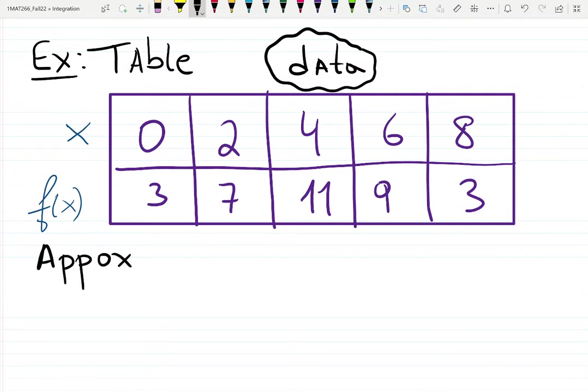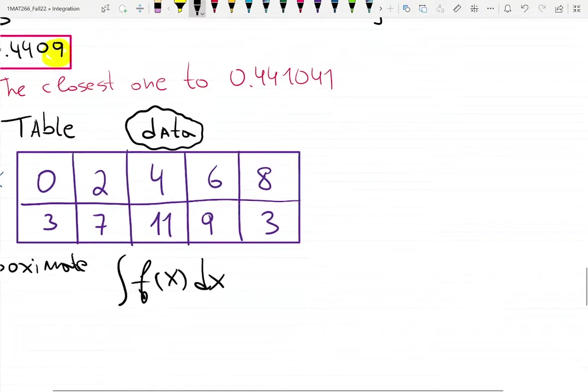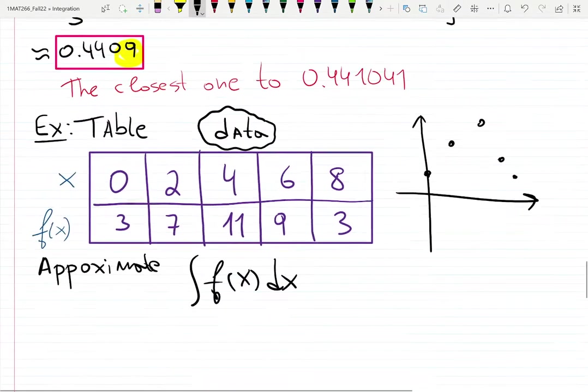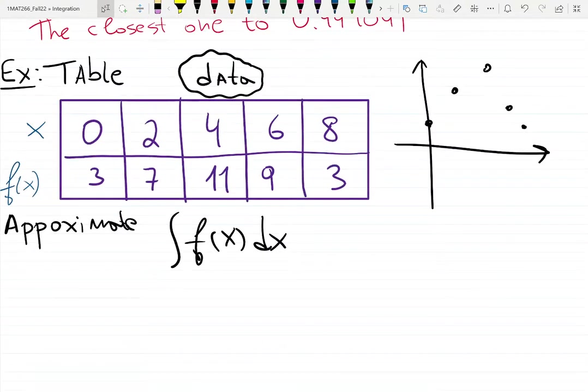Let's approximate the integral of f(x)dx. We don't know the function as an expression, only five data points: at x=0, f(x)=3; at 2, f=7; at 4, f=11; at 6, f=9; at 8, f=3. This is exactly what data science and statistics look like—just five dots, which is not enough.